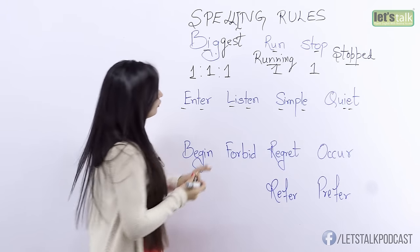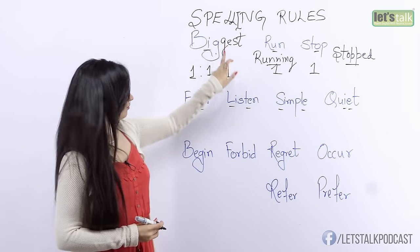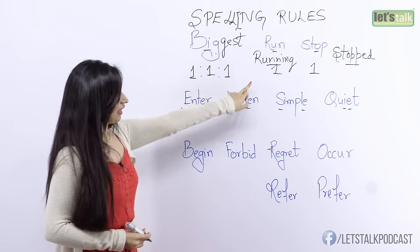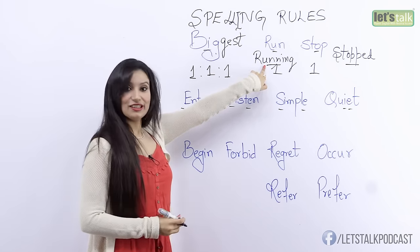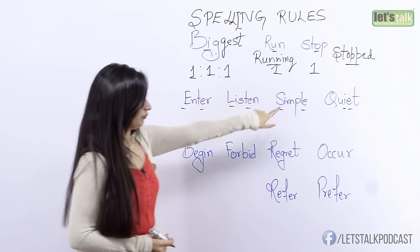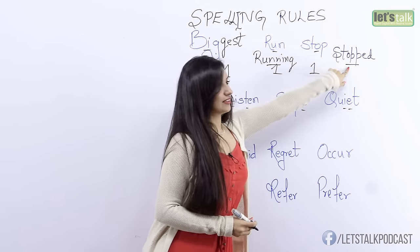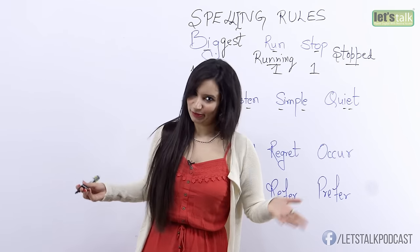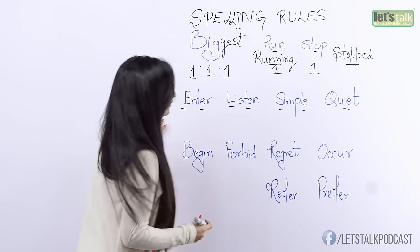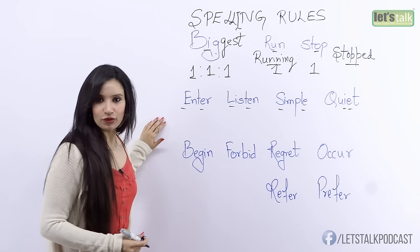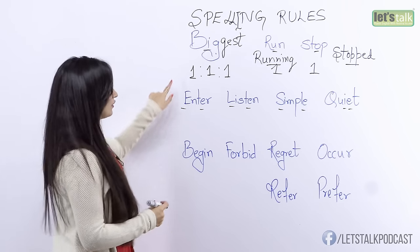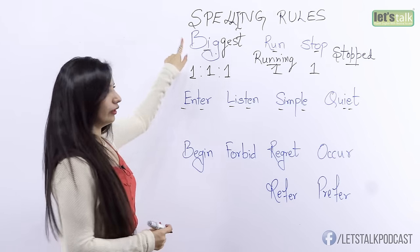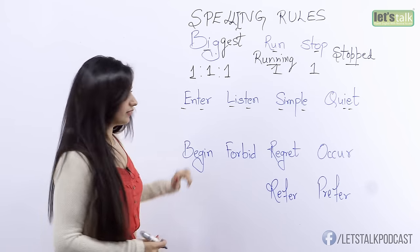Do you know what forms these words are? This is the superlative form, this is the present continuous form, and this is the simple past. Very simple, isn't it? With that, let's look at the next rule. This rule is called the one-one-one rule, for one-syllable words.